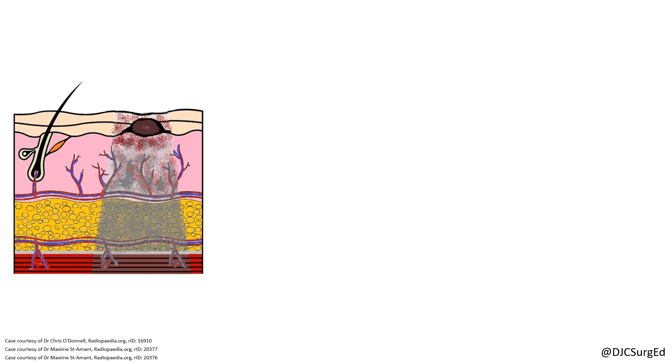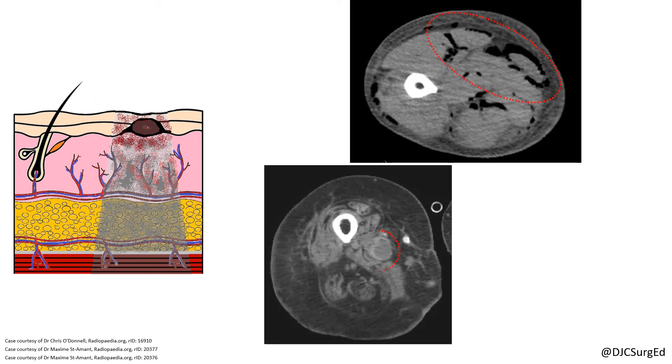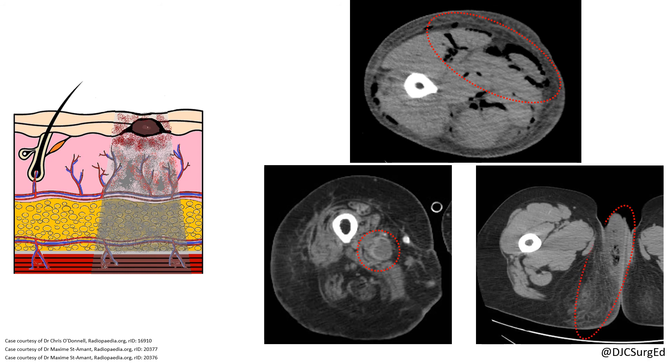Imaging is not necessary when there is a high level of suspicion and may delay early treatment. When the diagnosis is unclear in a stable patient, CT findings consistent with NSTI can include gas across tissue planes, fluid collections, asymmetric fascial or muscle thickening, and diffuse areas of soft tissue inflammation.